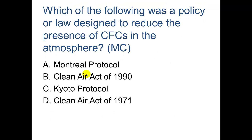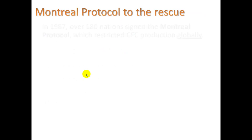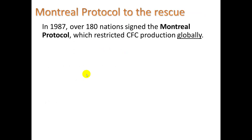Which of the following was a policy or law designed to reduce the presence of CFCs in the atmosphere? The Montreal Protocol. 180 nations signed this protocol, which restricted CFC production globally. It didn't end production entirely, but restricted it to only being used for things like refrigerators already designed to work with those chemicals, since you need to keep making them in case a refrigerator breaks and needs more refrigerant.